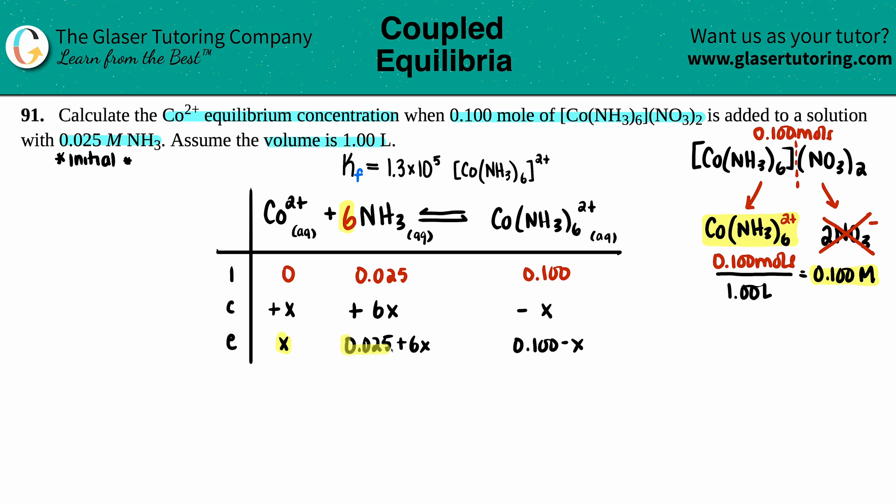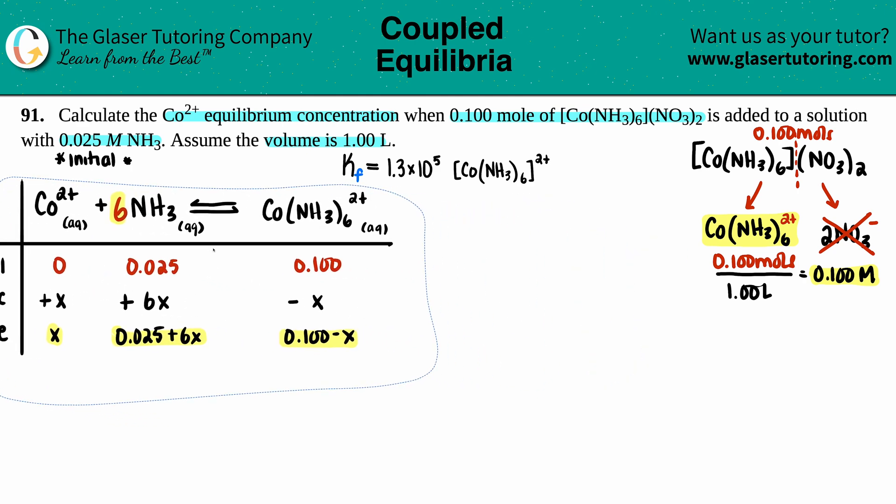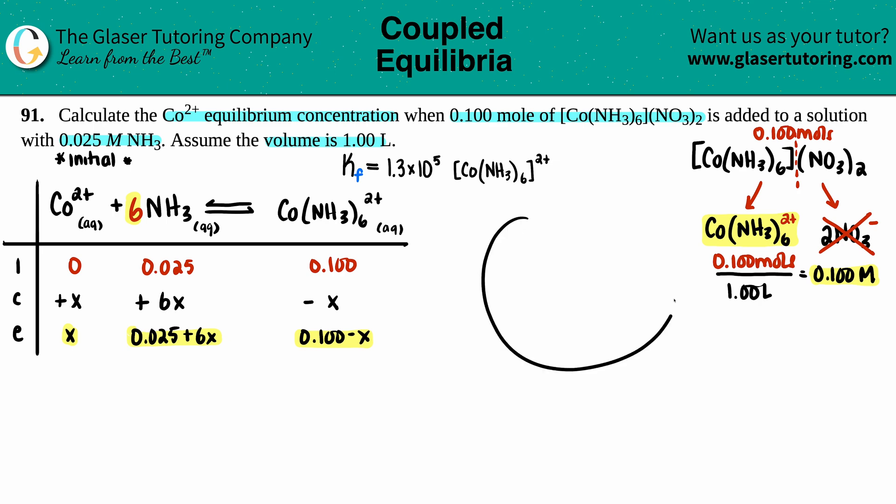These are your values that you're now going to put in for your Kf expression. Kf equals concentration of products over reactants. That's always a K value. They're all aqueous, so we're good here. So we have the concentration of Co(NH3)6 with a 2+ charge divided by your two reactants, so I have Co2+ times NH3. Just make sure that the NH3 is raised to the sixth, so that means the concentration of ammonia has to be raised to the sixth. There's a sixth coefficient here.